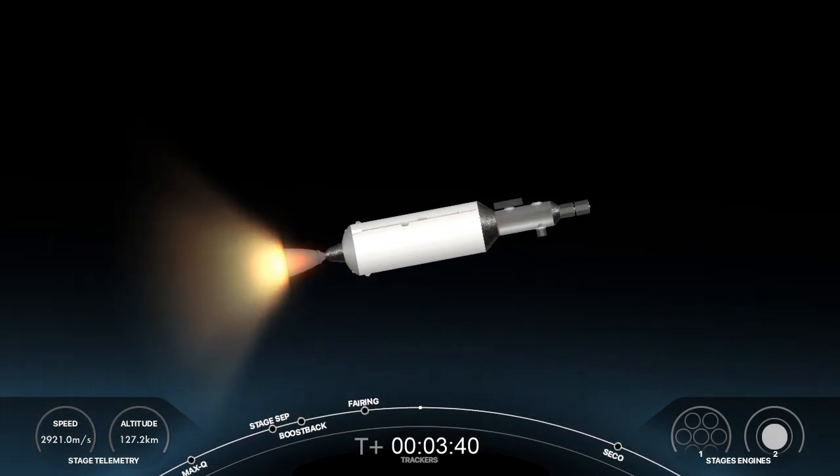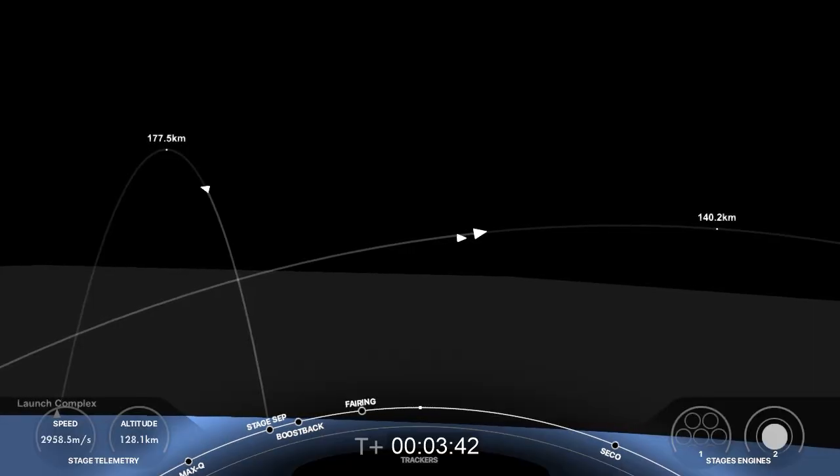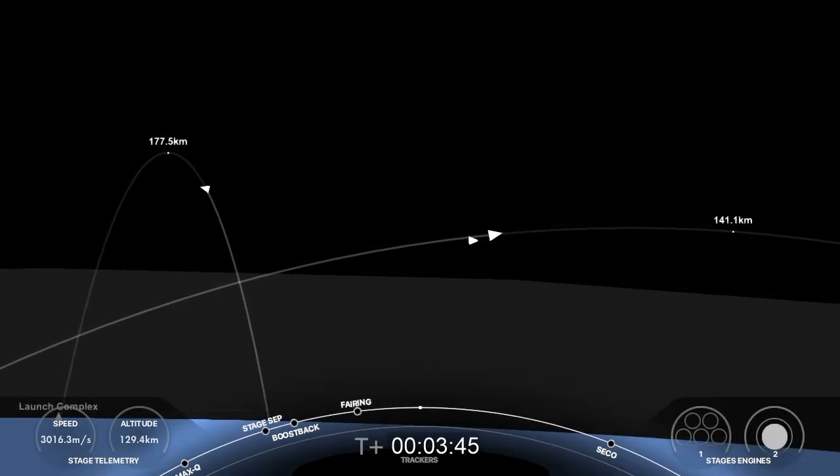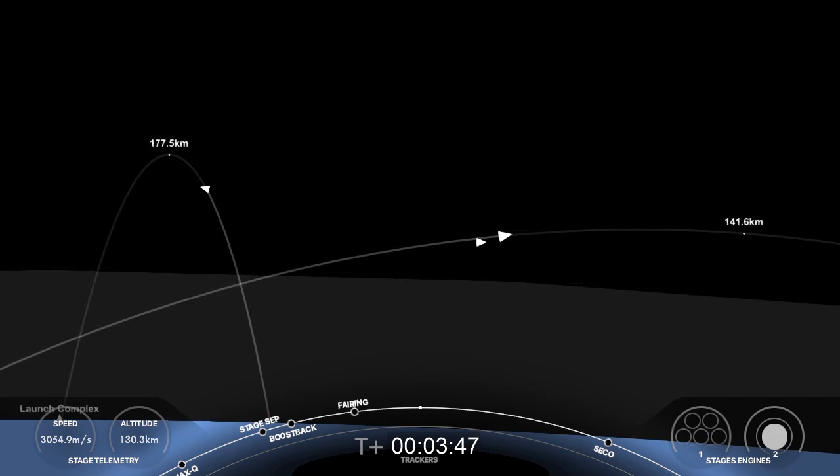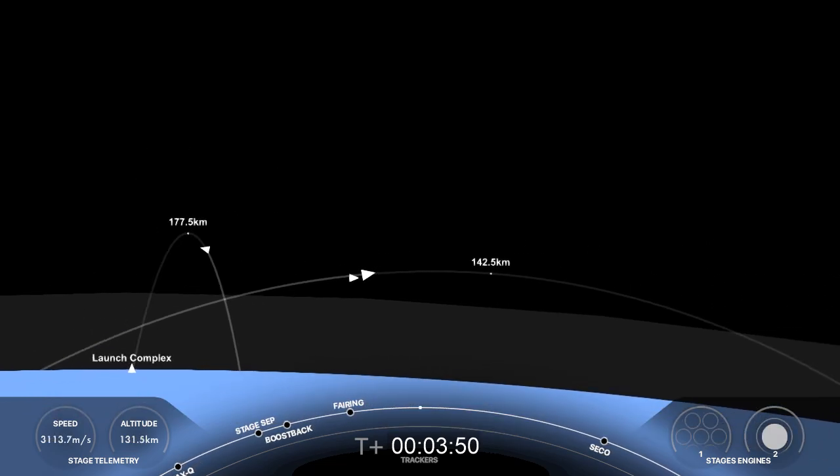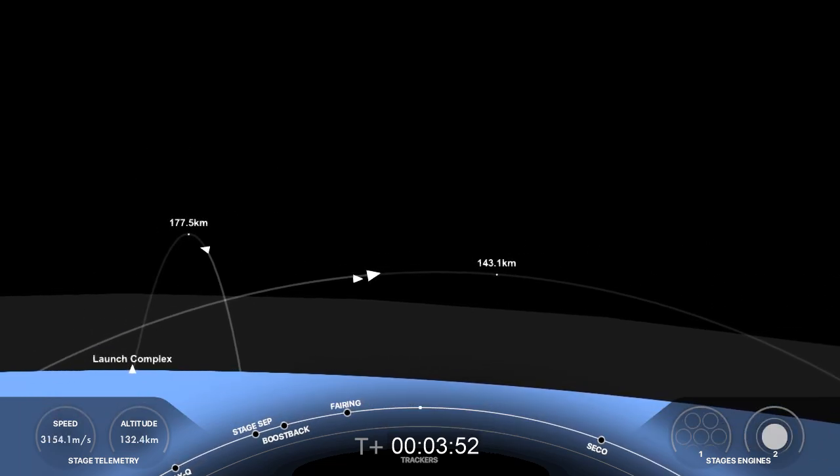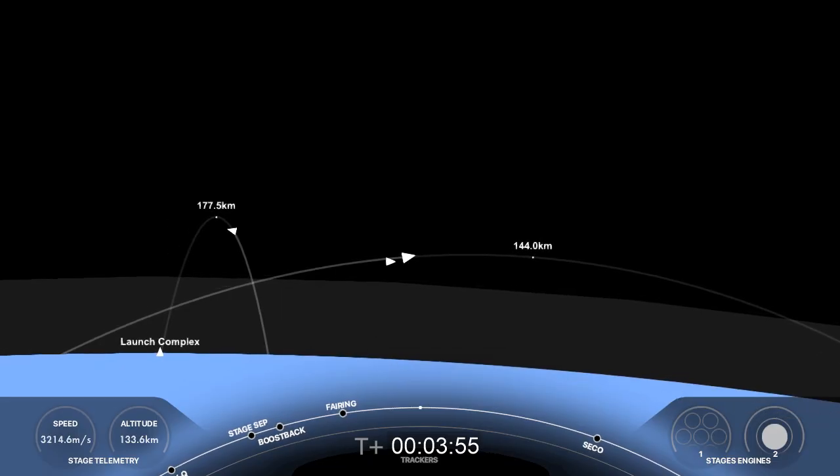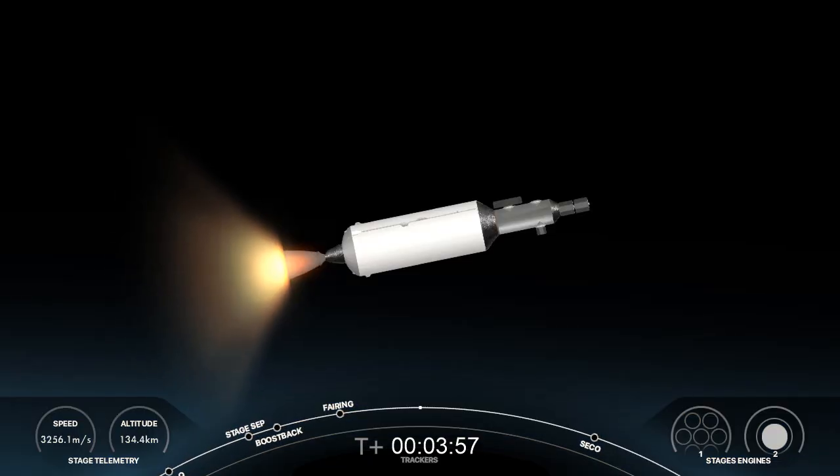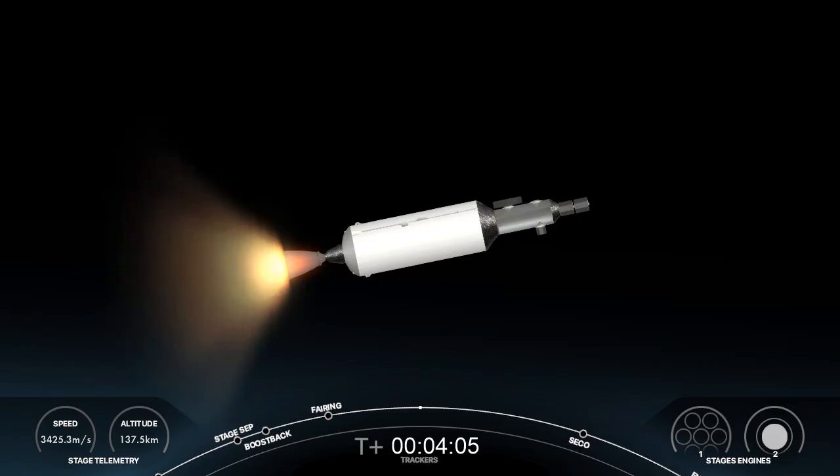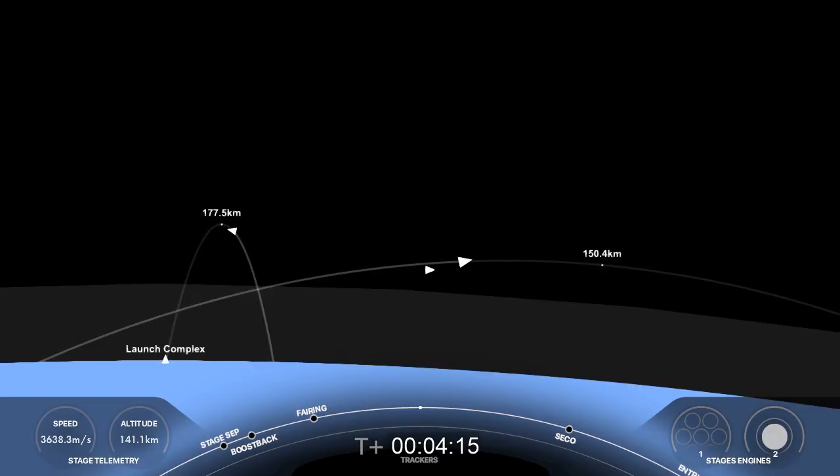We're currently at T plus three minutes and 40 seconds into today's mission. And coming up next we'll hear the callout for the first stage entry burn on the Falcon 9 first stage, coming up in about three minutes from now. Now Falcon 9 is the first orbital class rocket capable of reflight. Reusability allows SpaceX to refly the most expensive parts of the launch vehicle, which in turn drives down the cost of going to space. It's key to lowering the cost of space flight, which enables more investment in critical scientific research and makes missions like today's possible for more organizations and more often.